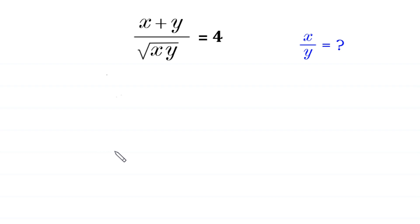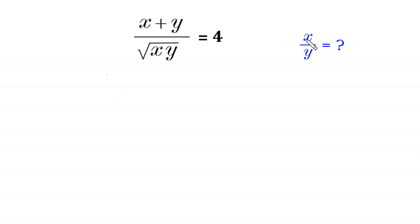Hello, welcome. Solve this very nice algebra equation: x plus y over square root of x times y is equal to 4. We need to find all possible values of x over y.